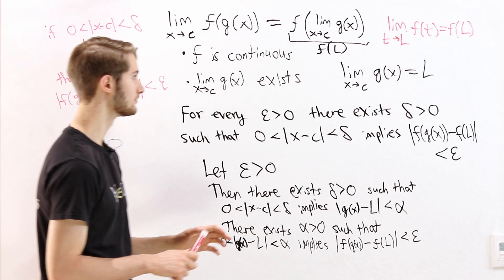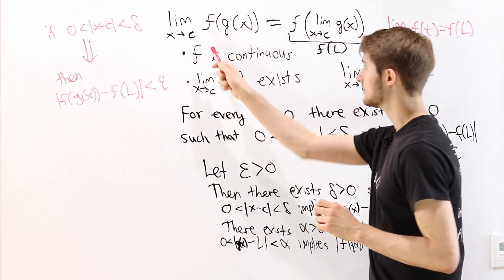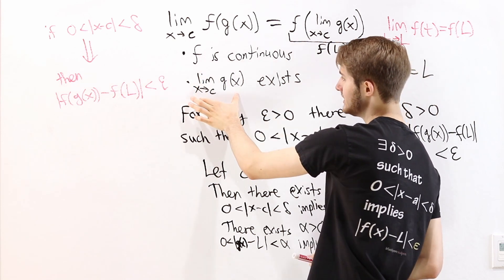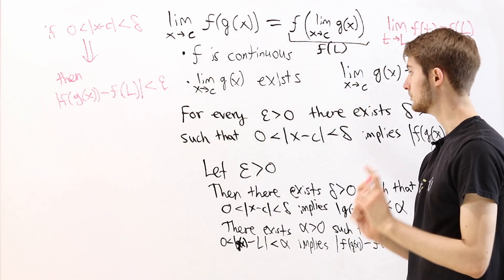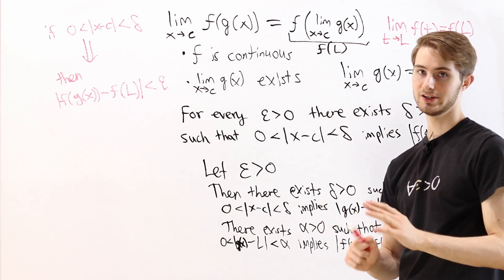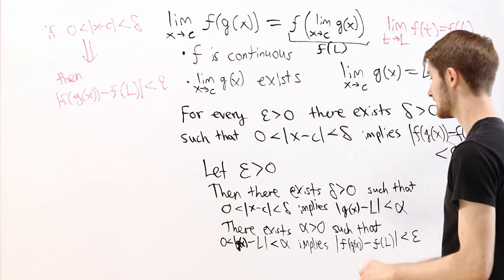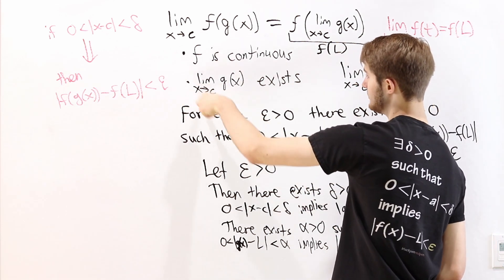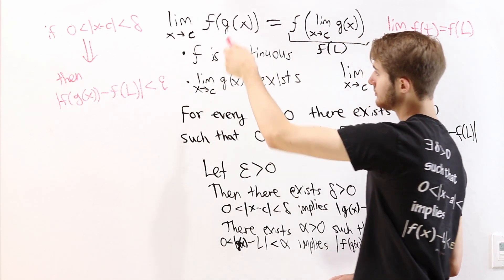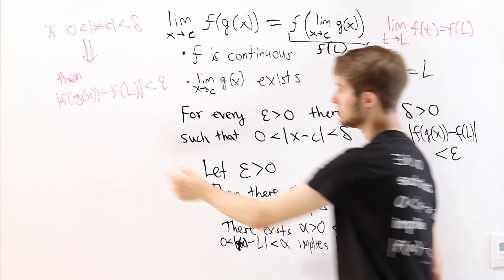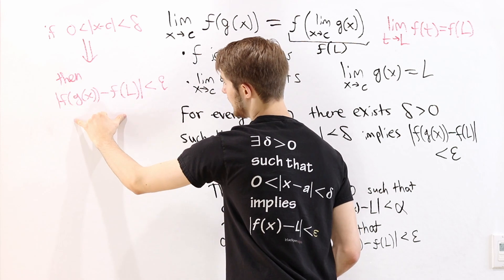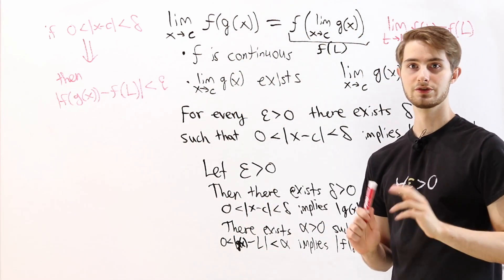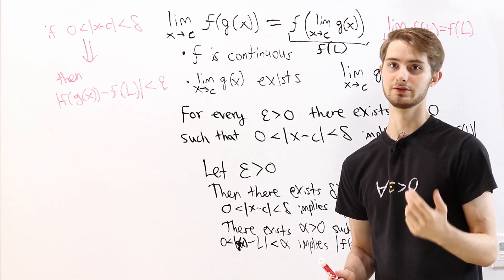So that is the proof for why we can switch the limit and the function, as long as the outside function is continuous and the inside limit exists. The way we do that is using the epsilon-delta definition of the limit, and in this case we have to use it twice — once for the inside limit of g of x, and once for the continuous function to show that if these two inputs are close to each other, then the outputs from f also have to be close to each other. That is the power of the epsilon-delta definition of the limit.